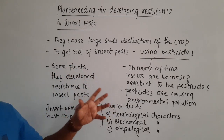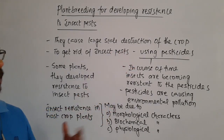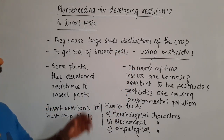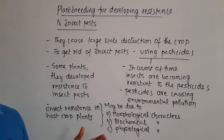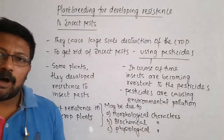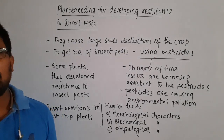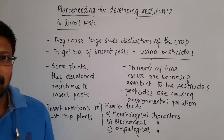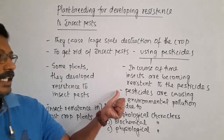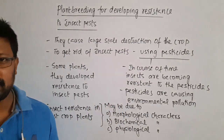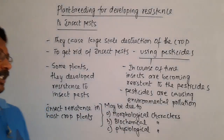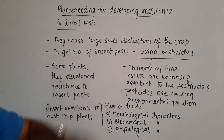We have been using chemicals called pesticides for a long time. However, there are some problems with using these pesticides. One problem is that over time, the insects on which we apply pesticides are developing resistance to those pesticides. So the normal quantity used to kill the pests is no longer enough and the concentration has to be increased. Additionally, using pesticides is causing environmental pollution, which we will see in coming sessions.